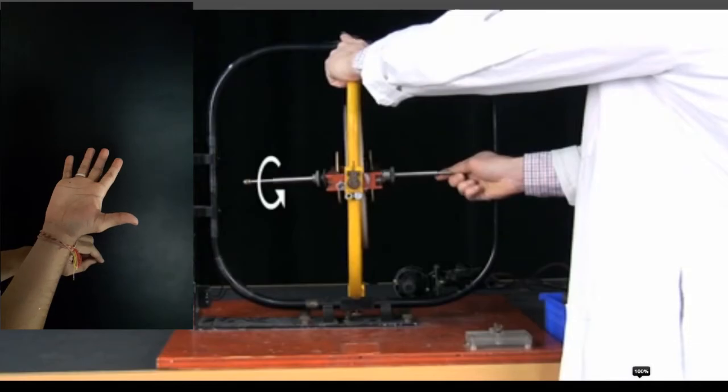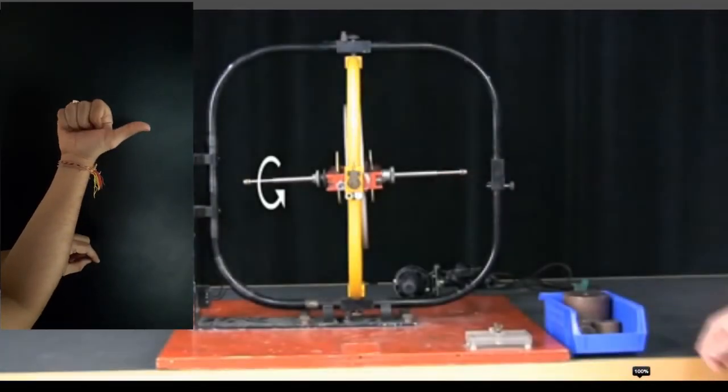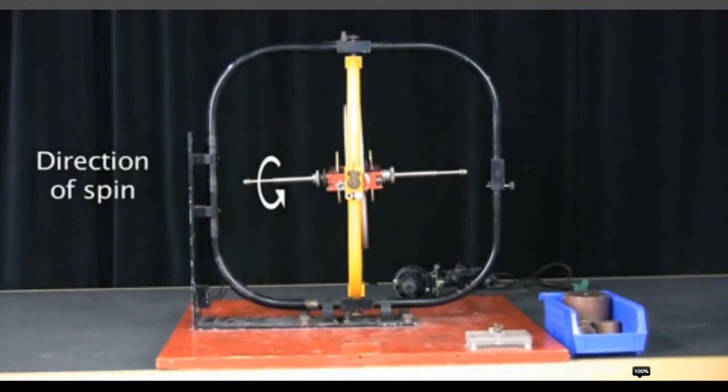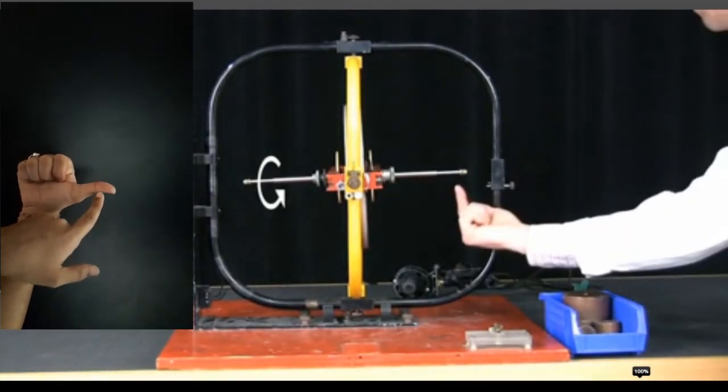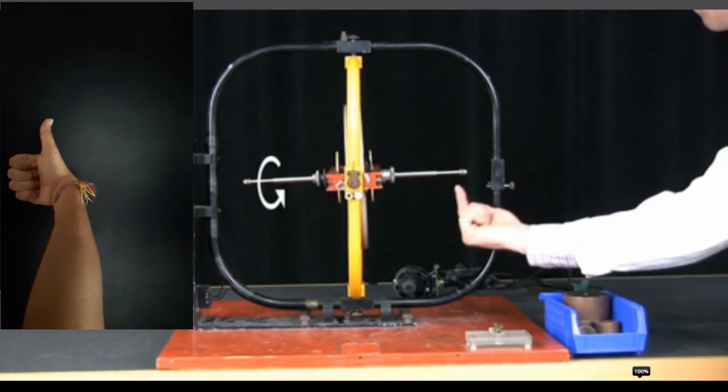Curl your four fingers in the direction of rotation of the rotor or disc. Note that you don't need to curl your thumb, keep it open parallel to spin axis. Now assume that your thumb is the spin axis and think that in which direction the force is applied on the spin axis. You need to rotate your thumb 90 degrees in that direction.